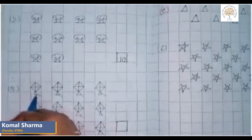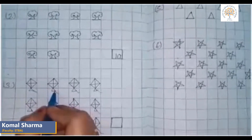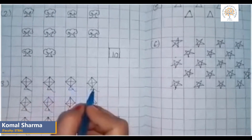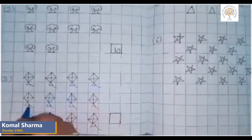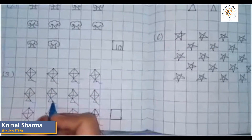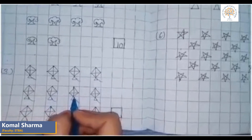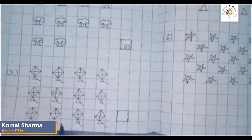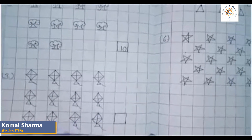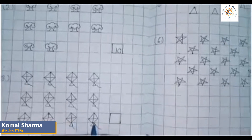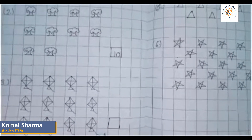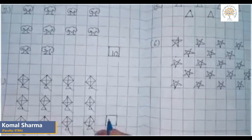Let us count kites: one, two, three, four, five, six, seven, eight, nine, ten, eleven, twelve. There are twelve pictures of kites. How many kites are there? Twelve. So we will write twelve.